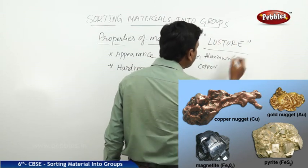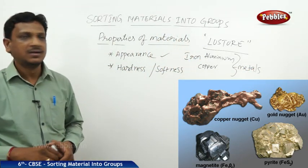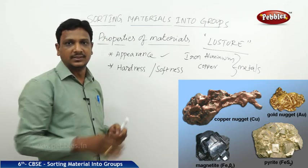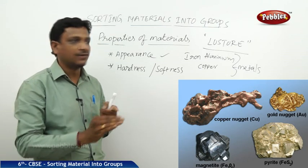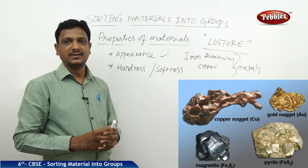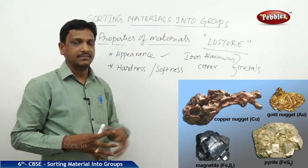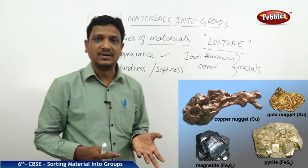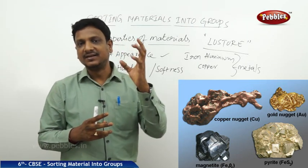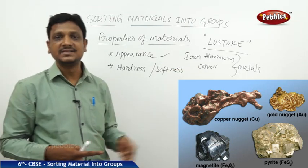Lustre is the property specific to metals. Iron, aluminium, and copper are all metals — metals have lustre. If you take sandpaper and scratch or rub the surface of iron, aluminium, or copper, all three will shine. By appearance, you can come to know it is a metal. If you find an unknown object, just scratch it and see — if it shows lustre, it is a metal. Chalk or mud cannot give lustre.